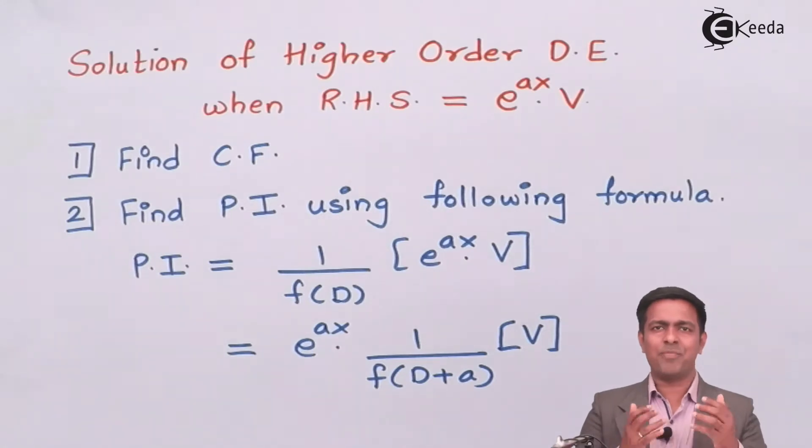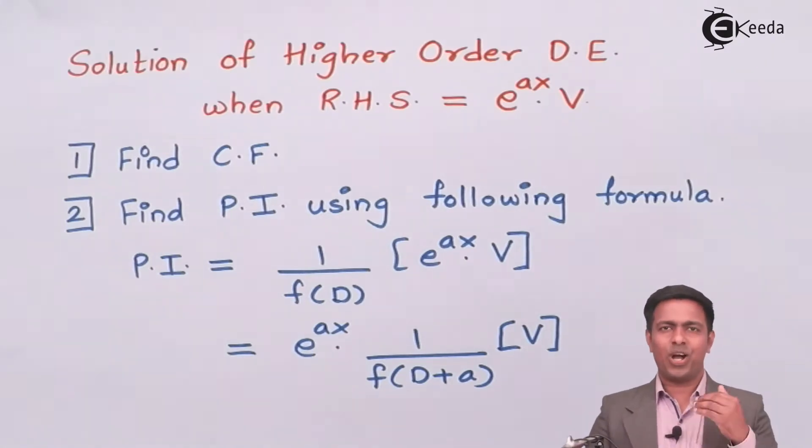So here I have a method in front of you. According to it, whenever the right-hand side is e to the power ax into V, we follow the following steps. Step number one is we have to find out the CF, which is nothing but complementary function.